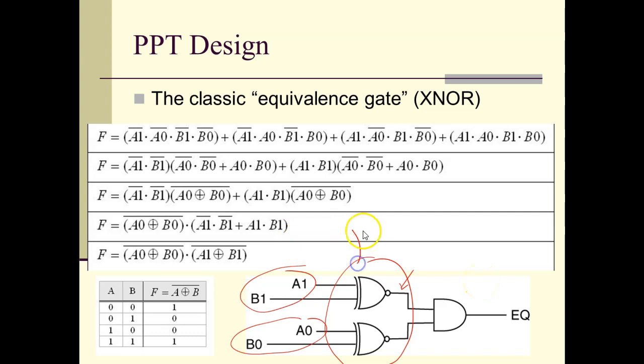This is a classic circuit. If we wanted to make it into a 3-bit comparator, the equations would be horrible, but it's simply a matter of adding an extra X-NOR gate here. This is another application of iterative modular design.